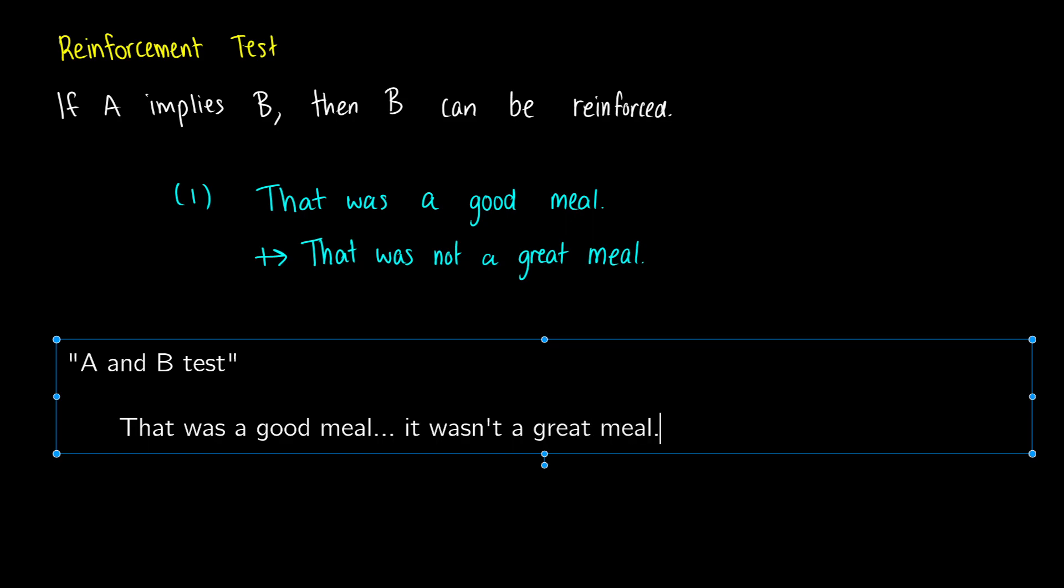So that was a good meal. Maybe we can use the word but here to make it sound better. That was a good meal, but it wasn't a great meal. So here, we're reinforcing, we're just stringing A and B back to back. And this doesn't sound redundant. If you do this with entailments, you get a sentence that sounds quite redundant.